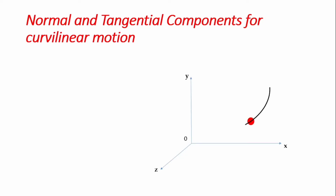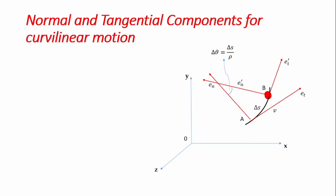There is also a derivative for deₙ/dθ. If the particle moves to point B we bring in a second coordinate eₙ′. The curve path between the two points spans Δs — the distance moved from A to B — and the angle facing Δs gives Δθ = Δs/ρ, where ρ is the radius of curvature. We also have that the velocity v is in the tangential direction.